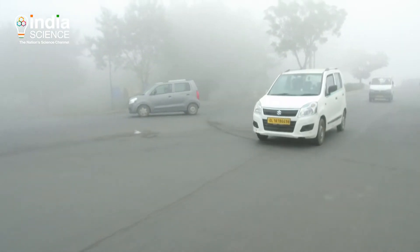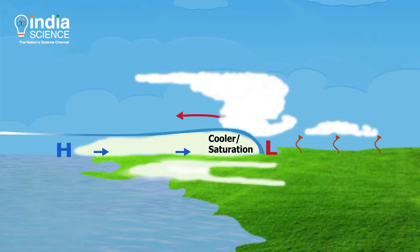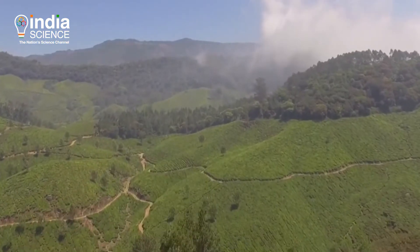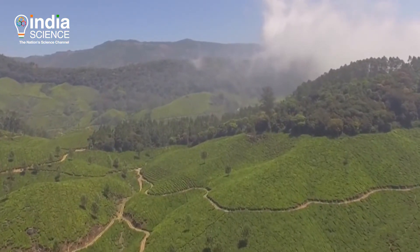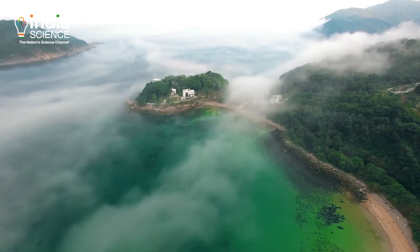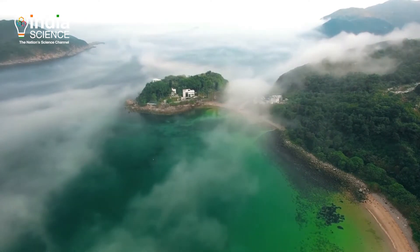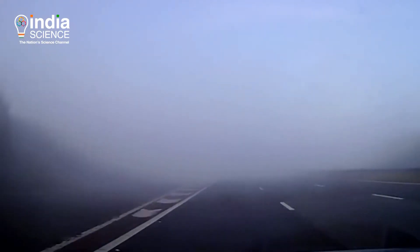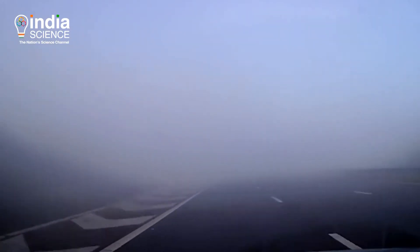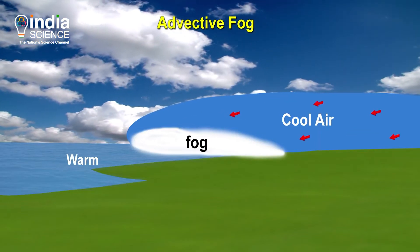There are several different types of fog, each forming under different conditions depending on the origin and formation. Six different types of fog are identified across the world, but the fog on the Indian landmass is typically radiative fog and advective fog.